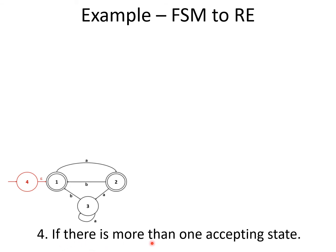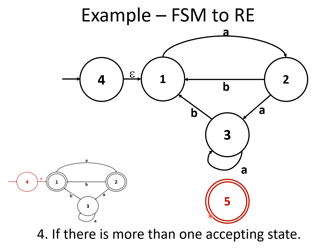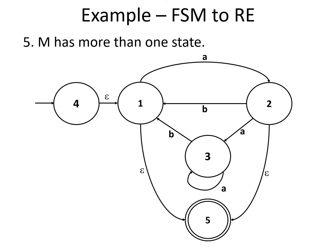In step 4, since there is more than one accepting state — state 1 and state 2 — we create a new accepting state and connect each of M's accepting states to it via an epsilon transition. The old accepting states are no longer accepting states; they become rejecting states. At this point, since we have five states here rather than just one, we continue with the next step.